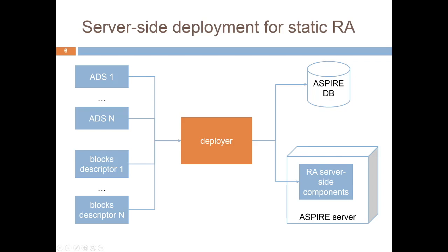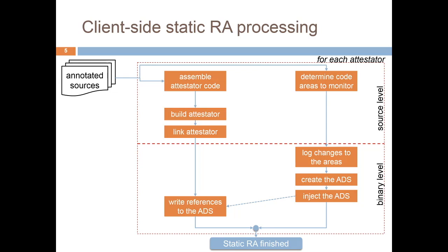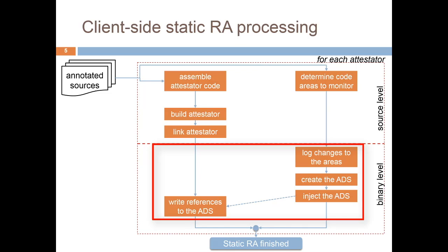On the client, the annotations are parsed to determine the attestators to create. Attestators are assembled and customized, as several attestators are generated from the same source files, then compiled and built. The areas to attest are identified from the annotations, and during the binary phase these areas will be transformed. Diablo keeps track of these transformations, generates the attestation data structures, and injects them into the binaries. The attestator then receives the pointer to the ADS.